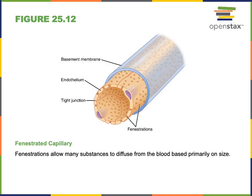The glomerulus is a fenestrated capillary that has numerous small pores called fenestrations, where liquid is forced out of the blood through the fenestrations and then flows into Bowman's capsule.